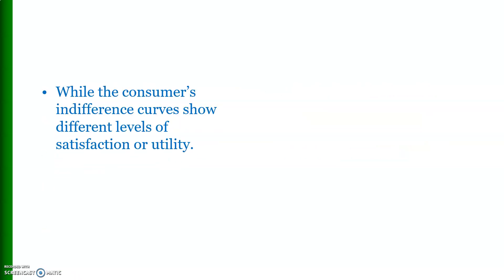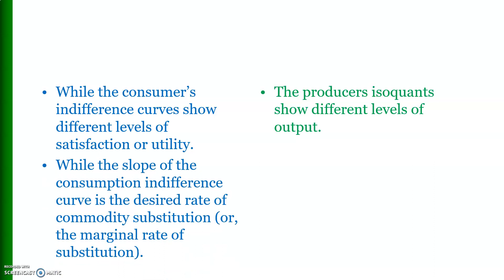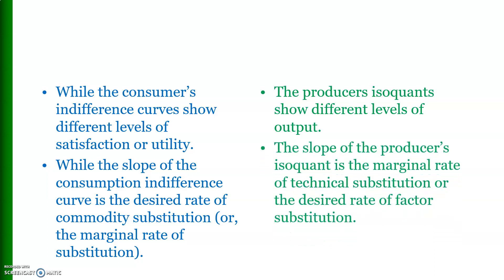While the consumer's indifference curves show different levels of satisfaction or utility, the producer's isoquants also show different levels of output. The slope of the consumer's indifference curve is the marginal rate of substitution, while the slope of the producer's isoquant is the marginal rate of technical substitution, also known as the desired rate of input substitution.